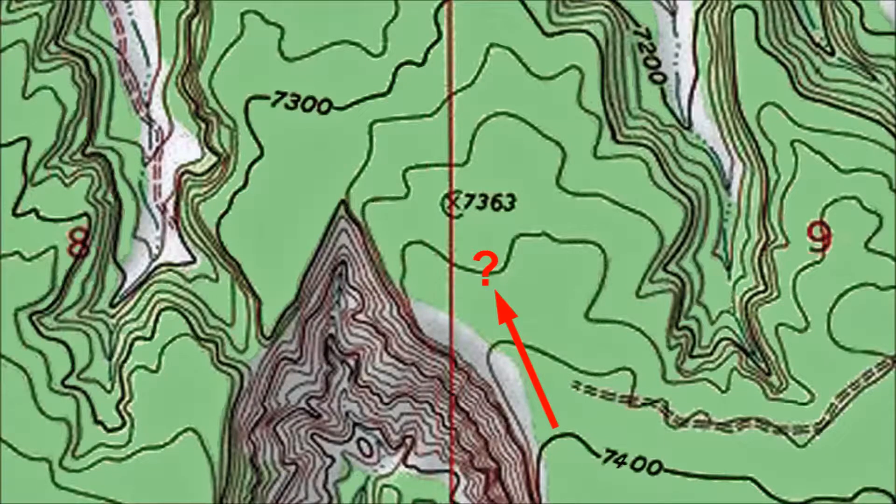On this map segment the contour interval is 20 feet, which means that if you drop from the 7,400 foot index contour line to the question mark we saw earlier you drop two contour lines times 20 feet or 40 feet. 7,400 minus 40 is 7,360, so the question mark is straddling the 7,360 foot contour.